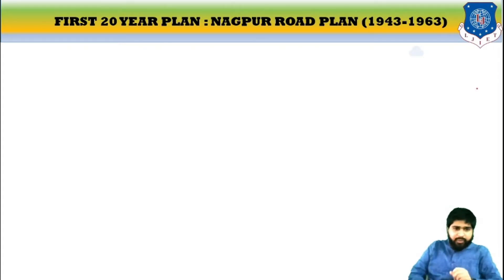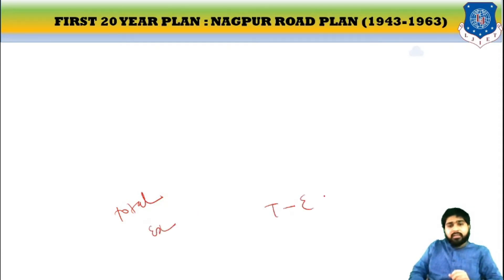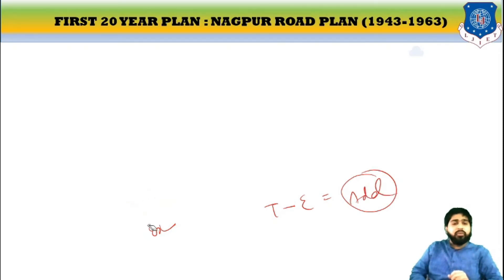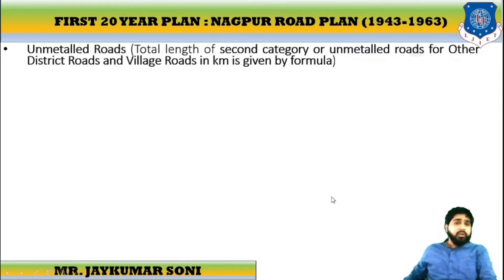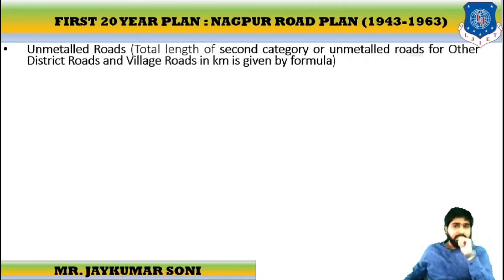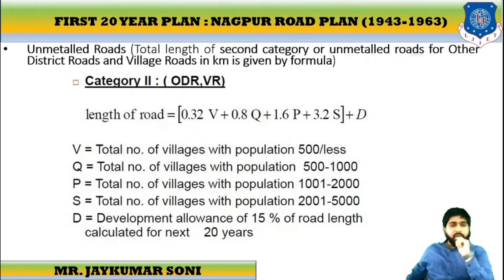We will calculate the total unmetal road length. We are already given the existing unmetal road length, so total minus existing will give us the additional required length. The unmetal road, also called the second category of roads, includes ODR. The equation for unmetal road length is: 0.32B + 0.8Q + 1.6P + length of ODR.